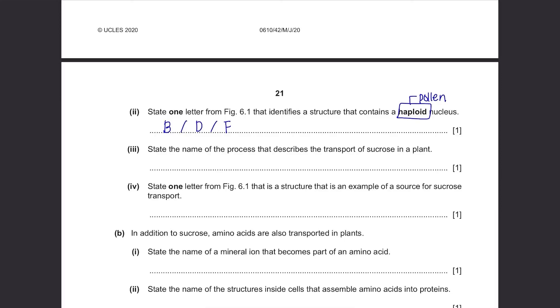State the name of the process that describes the transport of sucrose in a plant. Transport of sucrose is called translocation. If it's a transport of water, it's called transpiration. Memorise both terms together.